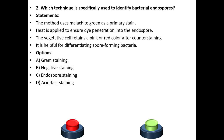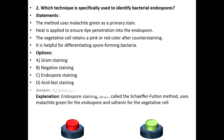Options: A. Gram staining. B. Negative staining. C. Endospore staining. D. Acid-fast staining. The answer is C, endospore staining. Endospore staining, often called the Schaefer-Fulton method, uses malachite green for the endospores and safranin for the vegetative cells.